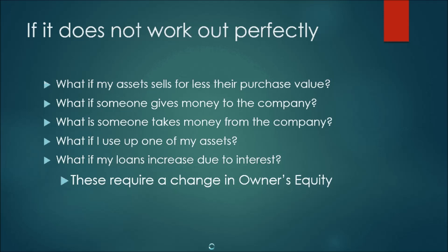Here are a couple of questions. What if your assets sell for less than the purchase cost? What if someone gives money to the bank — an increase in assets but no increase in liabilities? What if someone takes money from the bank — a decrease in assets without a change in liabilities? What if you used up one of your assets worth $300 and now it's gone? What if your loans increased due to interest — liabilities going up without assets going up? All of these can be answered by doing a change in owner's equity, the last account of accounting, which would balance out the equation. But that I'll explain next — thank you for listening.